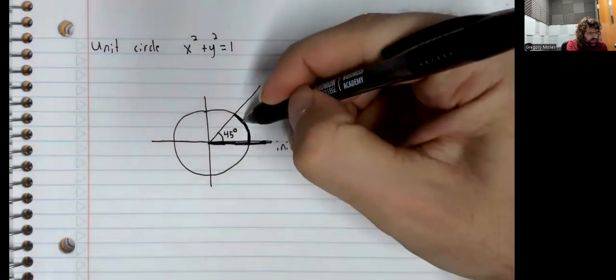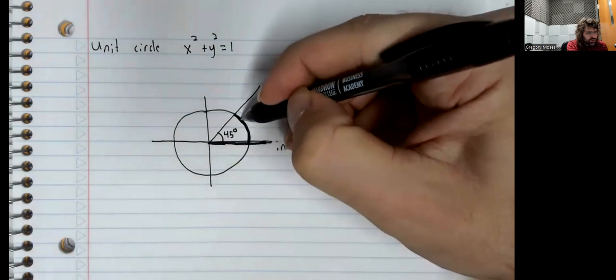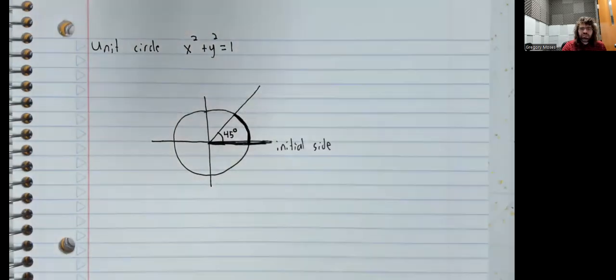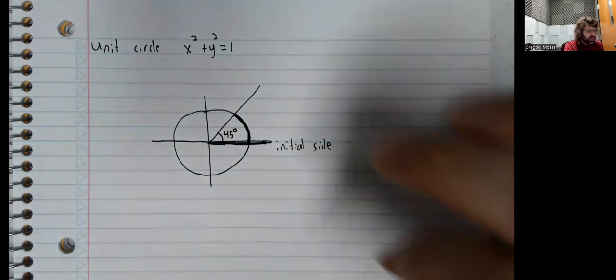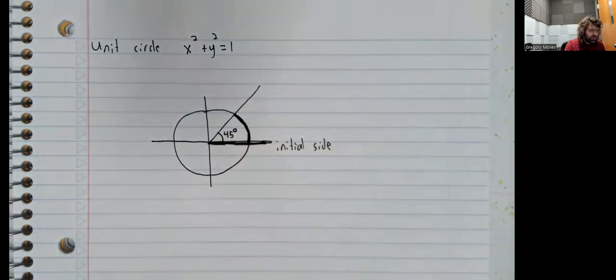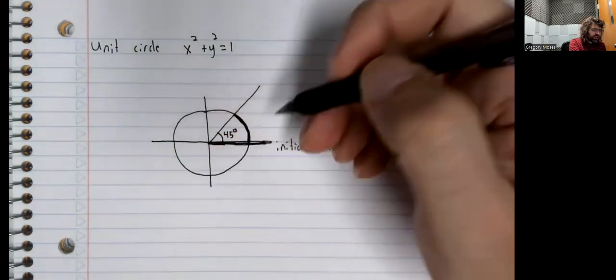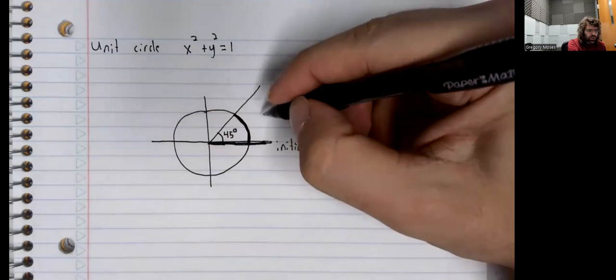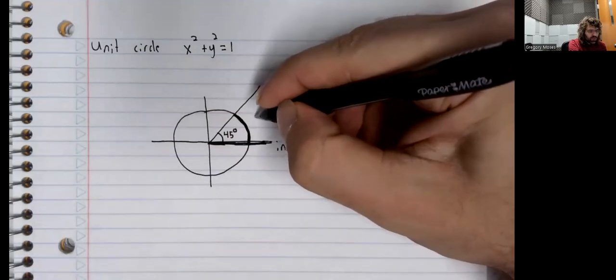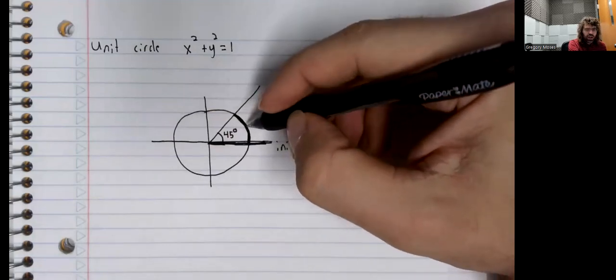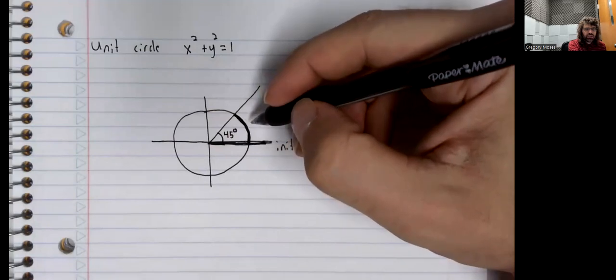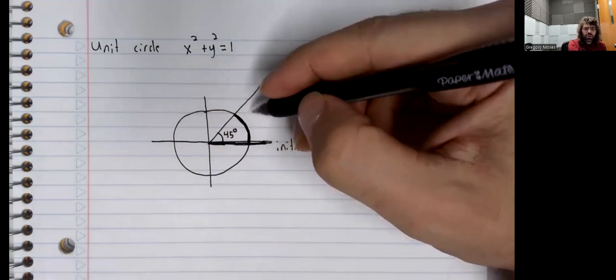This arc on the unit circle has some length. This is an eighth of the full circumference. The circumference of a circle with radius one is two pi.